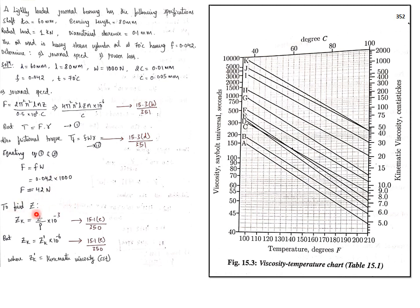To find the value of Z, here Z is nothing but the dynamic viscosity. ZK represents kinematic viscosity in meters squared per second, and ZK dash represents kinematic viscosity in centistokes. The equation is ZK equals Z divided by rho into 10 raised to minus 3. You can get this from page 350 — note that 10 raised to minus 3 is missing there, just add it. To find ZK, take ZK dash from the graph and substitute into 10 raised to minus 6 to get the ZK value.